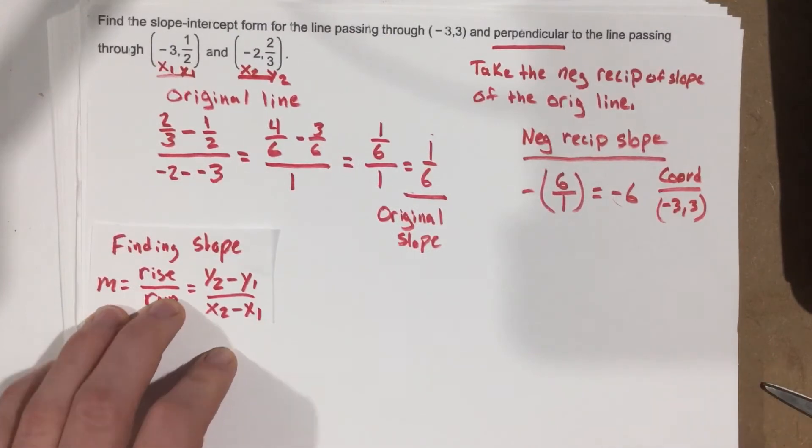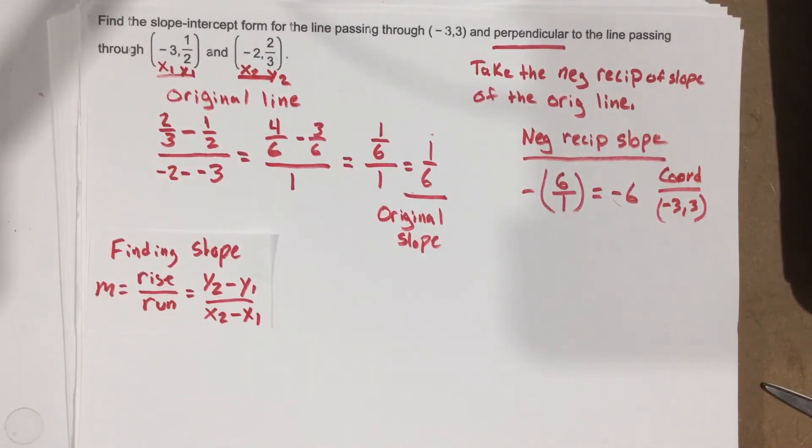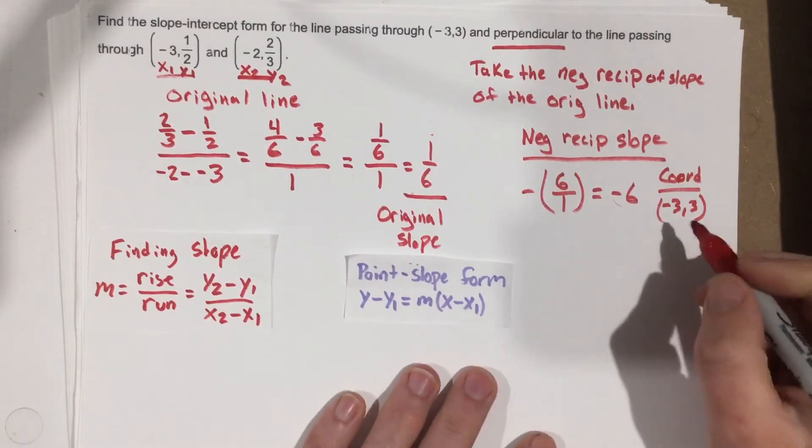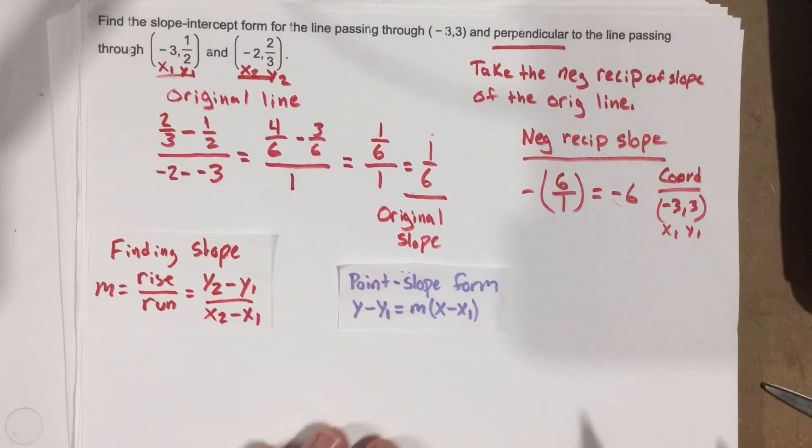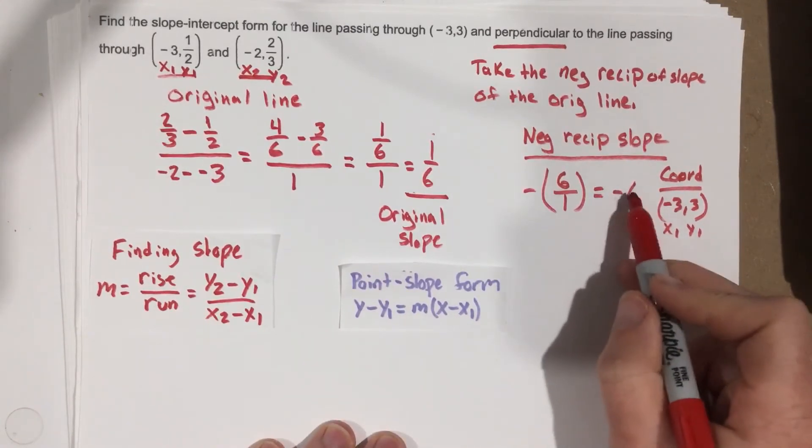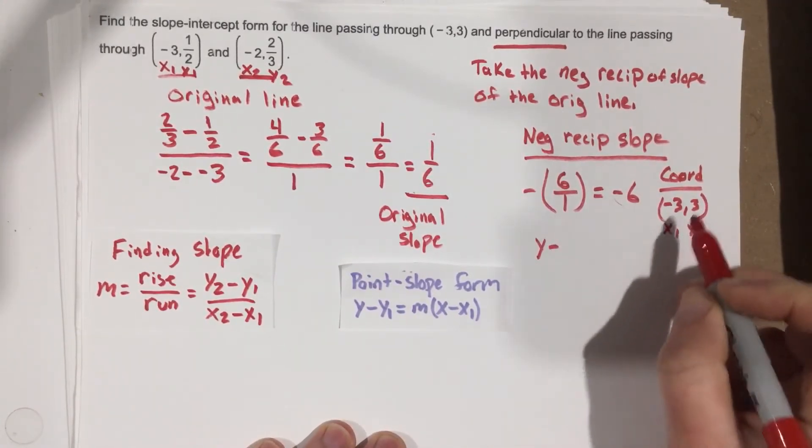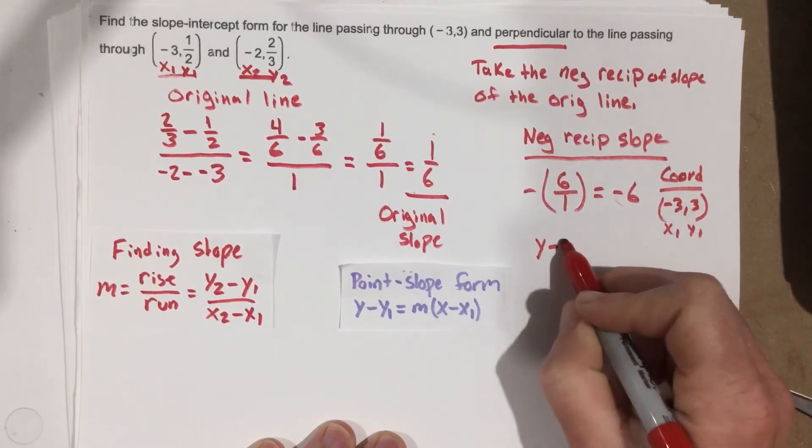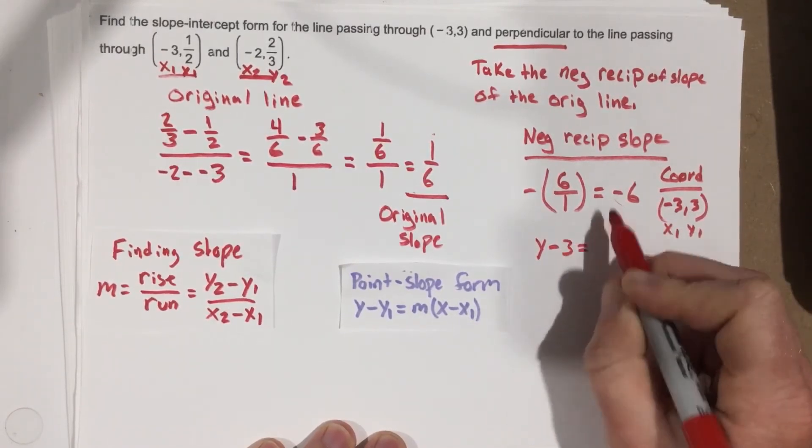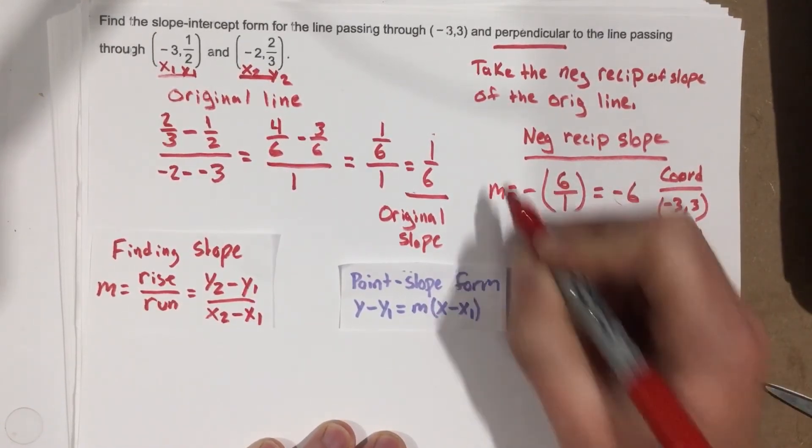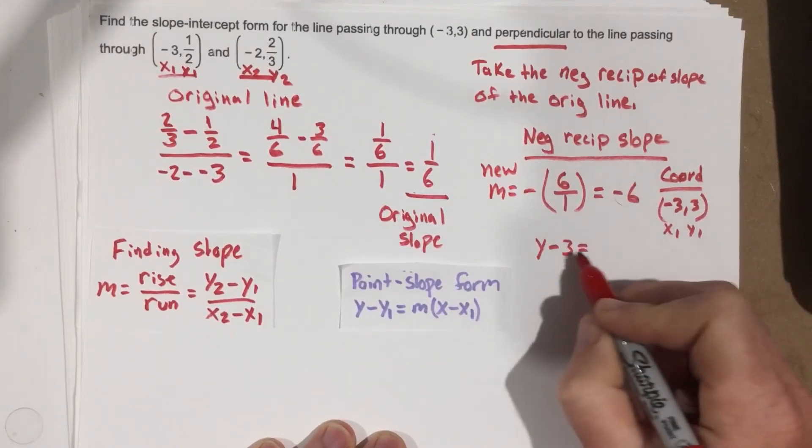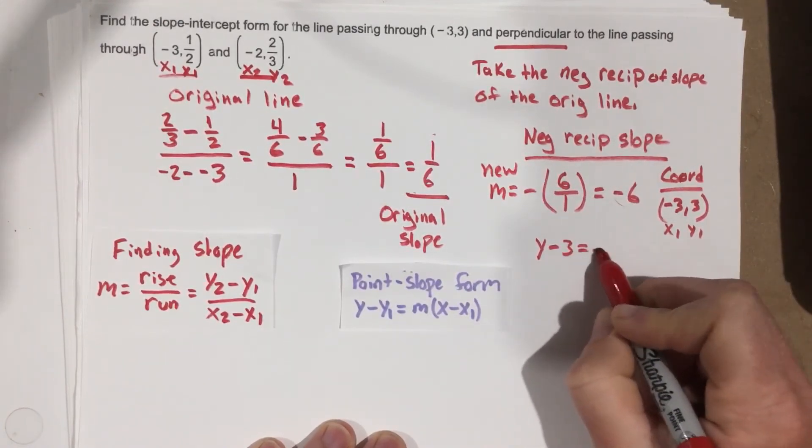So now I can use point-slope form to find this. So let's go ahead and pull out point-slope form. I'm going to label this one x₁ and y₁. I have this negative reciprocal slope, which is negative 6. So I'm going to say y minus y₁, which is 3, equals... This is our m, right? This is the slope, and I should maybe label that. That's m equals, and we'll call it the new m. So y minus 3 equals negative 6.